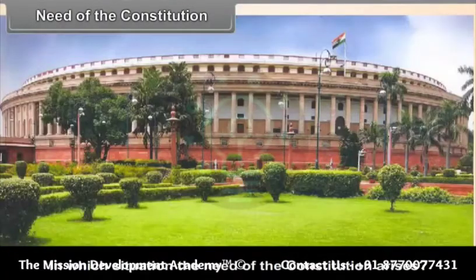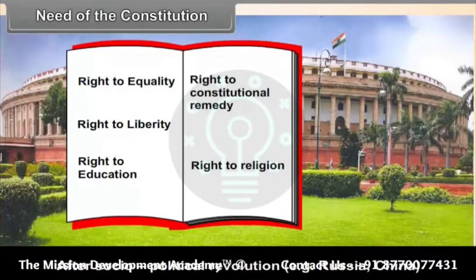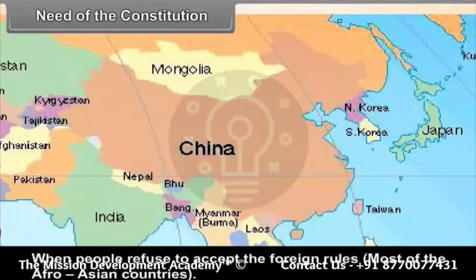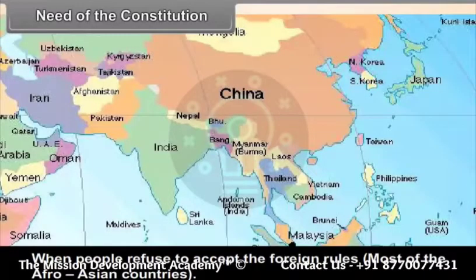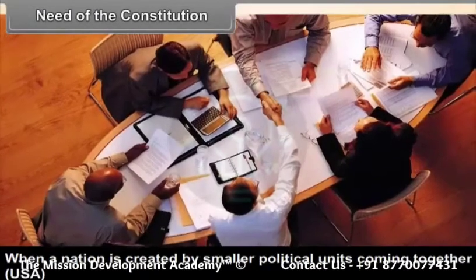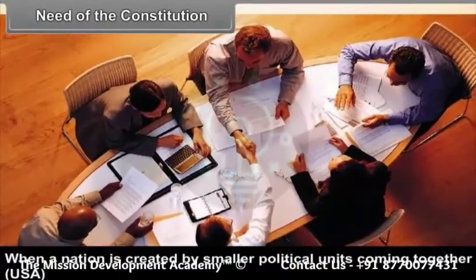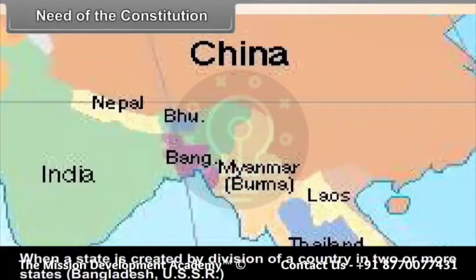In which situations does the need for a constitution arise? When people refuse to accept foreign rule — as in most Afro-Asian countries. When a nation is created by smaller political units coming together, such as the USA. When a state is created by the division of a country into two or more states, such as Bangladesh and the USSR.